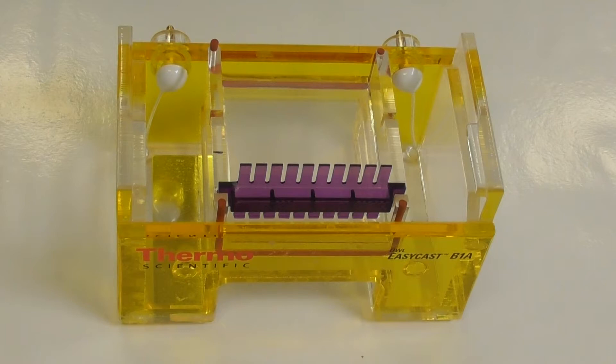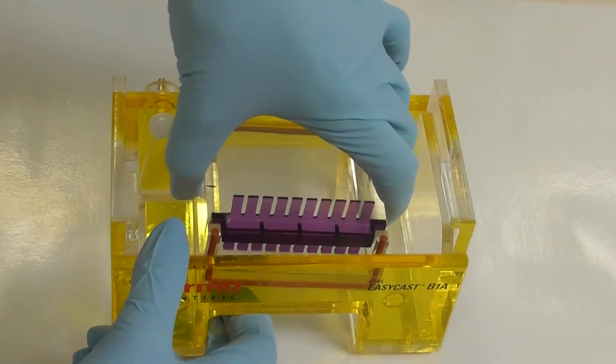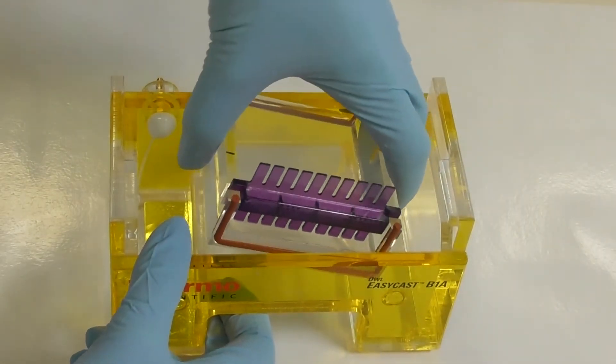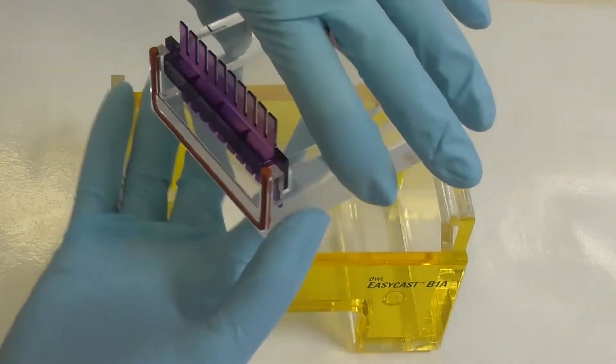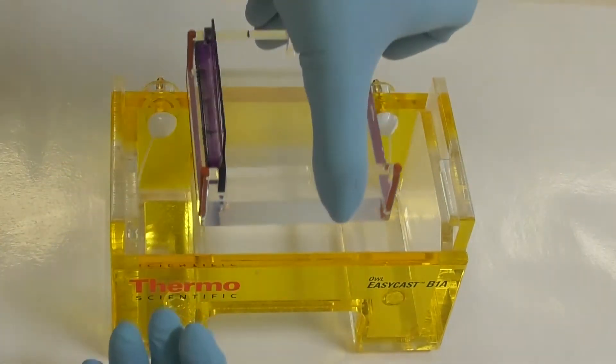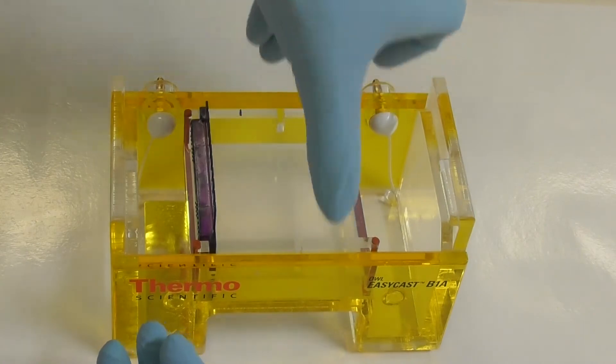At this point the gel comb must be placed into the molten gel in order for wells to form in the agar as it cools. Once the gel is cooled, gently remove the gel tray, rotate it 90 degrees and place it into the gel tank with the comb on the left.